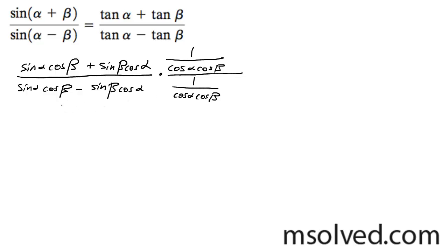Alright, so I multiply this through and on the top the cosine beta's cancel out and you end up with sine alpha over cosine alpha plus sine beta over cosine beta.